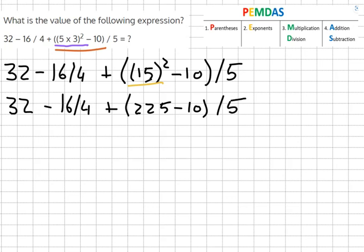And then we'll finish off the parentheses by opening it up. So it becomes 32 minus 16 over 4 plus 225 minus 10 which equals 215 over 5.